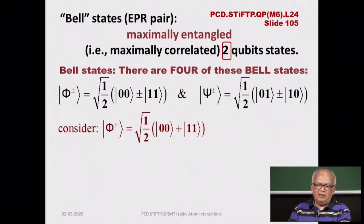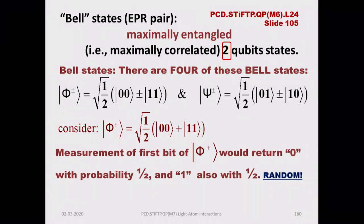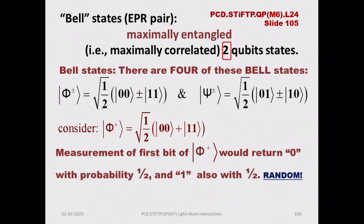Taking phi-plus as an example, it is a superposition with a plus sign of |00⟩ and |11⟩, both with coefficients 1/√2. If you measure the first bit of phi-plus, it returns 0 with probability one-half — the modulus square of the corresponding coefficient — and returns 1 also with probability one-half. It is like the toss of a classical coin: completely random.